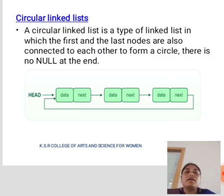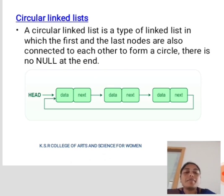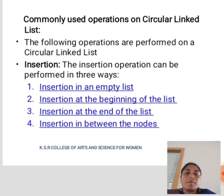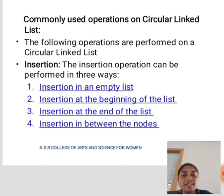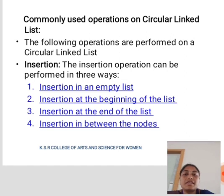Next is a circular linked list. A circular linked list is a type of linked list in which the first and the last nodes are also connected to each other to form a circle. There is no null at the end. Here is a diagram of the circular linked list. Commonly used operations on circular linked list: First is insertion. The insertion operation can be performed in three ways — insertion in an empty list, insertion at the beginning of the list, insertion at the end of the list, and insertion in between the nodes.